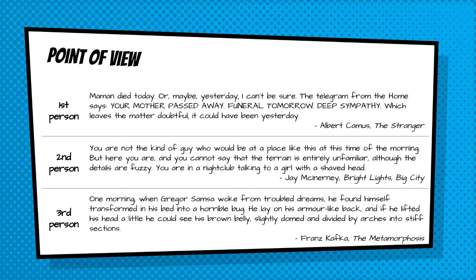In third person, we have a narrative voice that's outside of the story — a character who does not exist within the story. Here's an example from Kafka's The Metamorphosis: 'One morning, when Gregor Samsa awoke from troubled dreams, he found himself transformed in his bed into a horrible bug. He lay on his armor-like back, and if he lifted his head a little, he could see his brown belly slightly domed and divided by arches into stiff sections.'